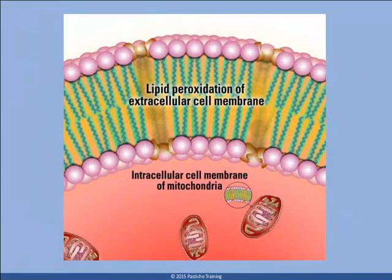What also needs to be remembered is that if the keratinocyte cell membrane is unviable, so will be the melanocyte cell membrane. A combination of both will lead to poor dispersion of pigment across the spinosome layer.